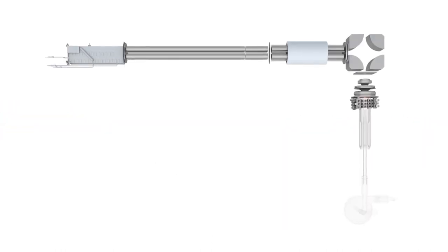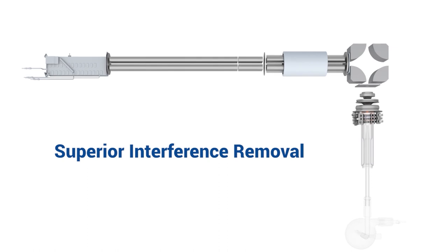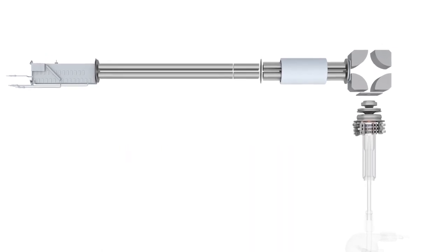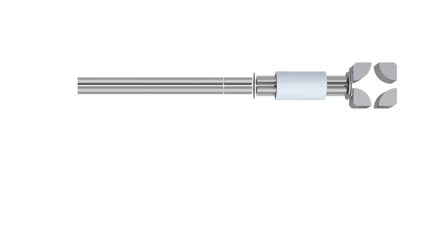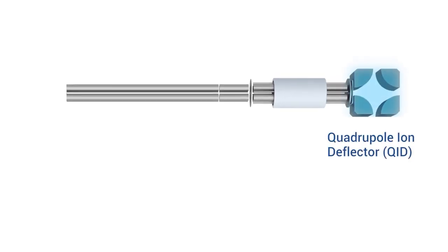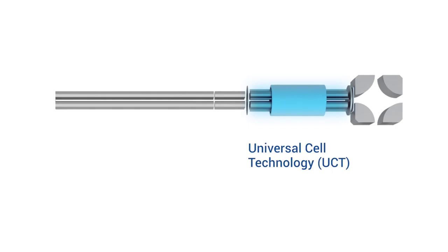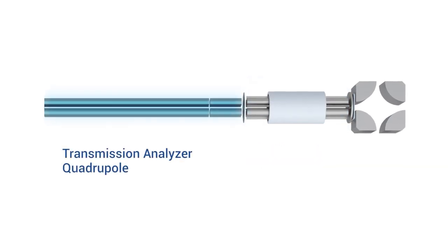Managing interferences is key to lower detection limits. The NexION 2200 system features a unique three-quad design with the quadrupole ion deflector, the universal cell, and the transmission analyzer quadrupole.